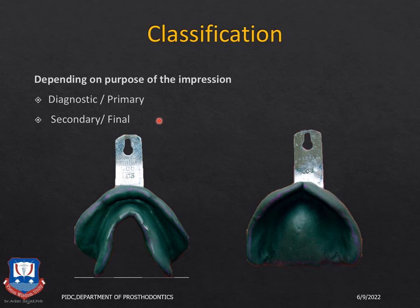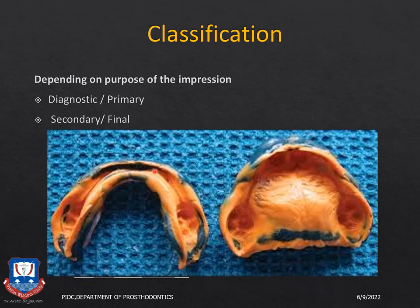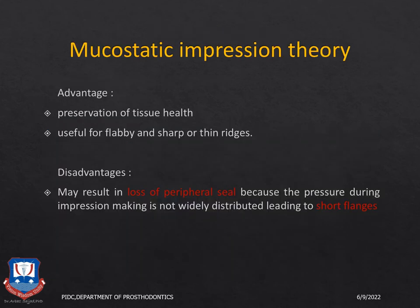Depending upon the purpose of the impression, we have primary or diagnostic impressions — taken with impression compound in non-perforated edentulous stock trays, or alginate in perforated edentulous stock trays. The second type is the secondary or final impression, taken in a custom tray — generally with green stick tracing compound for border molding and zinc oxide eugenol impression paste for the final wash.